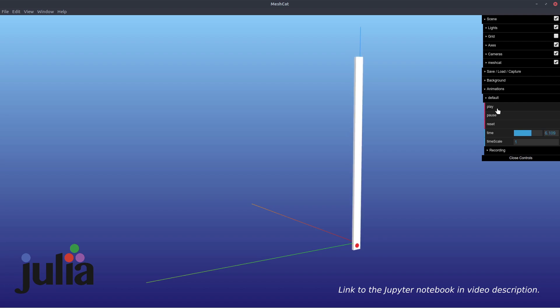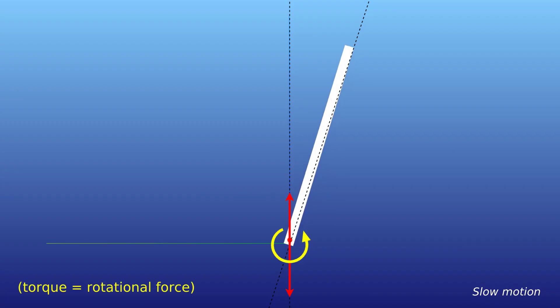When the pivot vibrates up and down, the average net torque applied to the pendulum rotates it towards the central axis. Once it crosses that axis, the torque tries to rotate the pendulum clockwise.